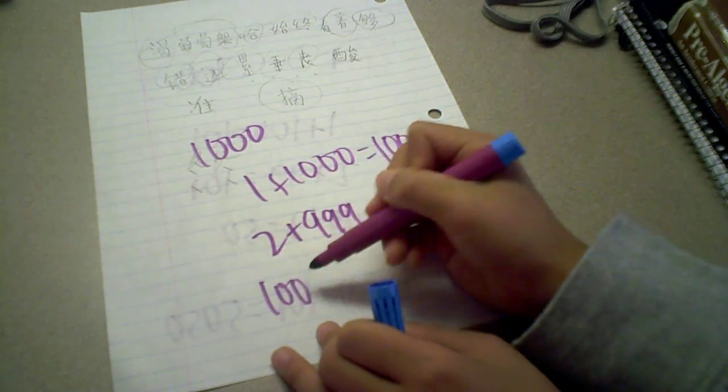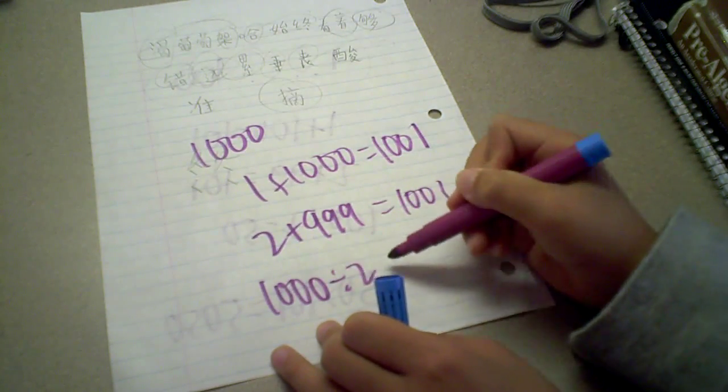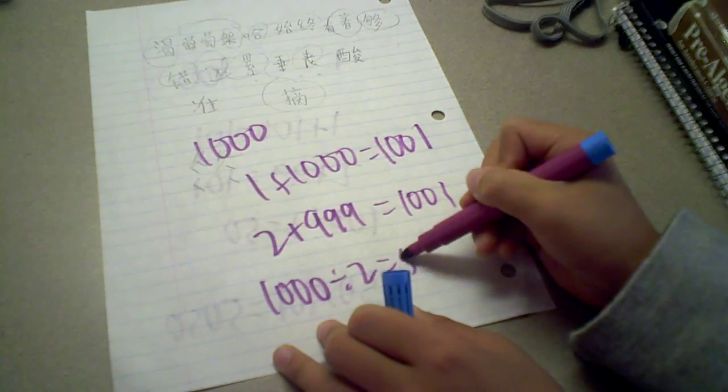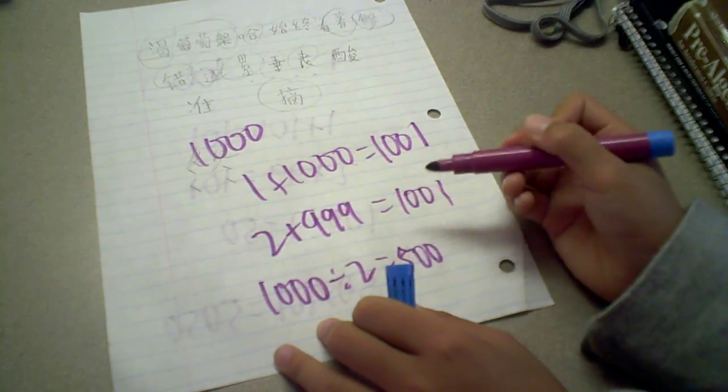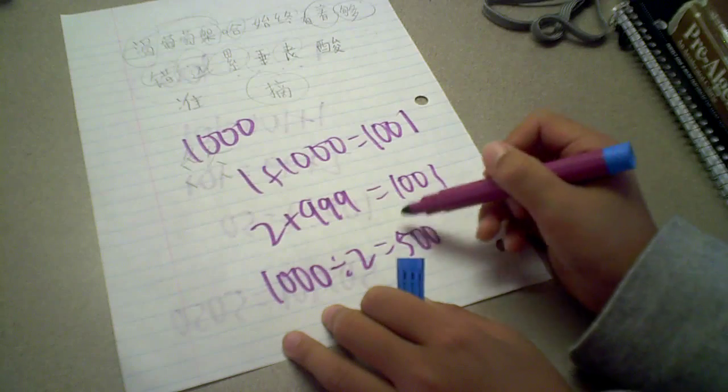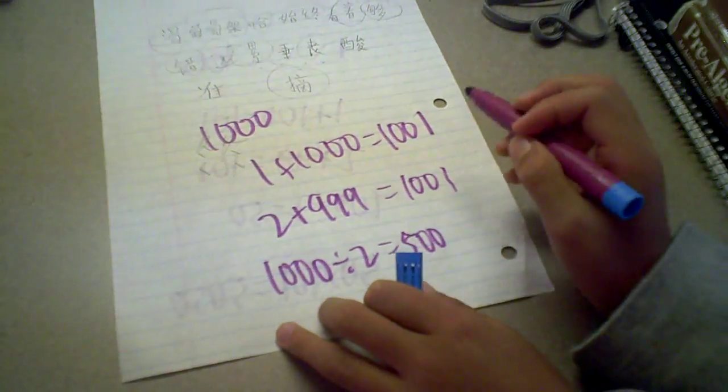Then 1,000 divided by 2 equals 500. So 500 pairs, and they all equal 1,001.